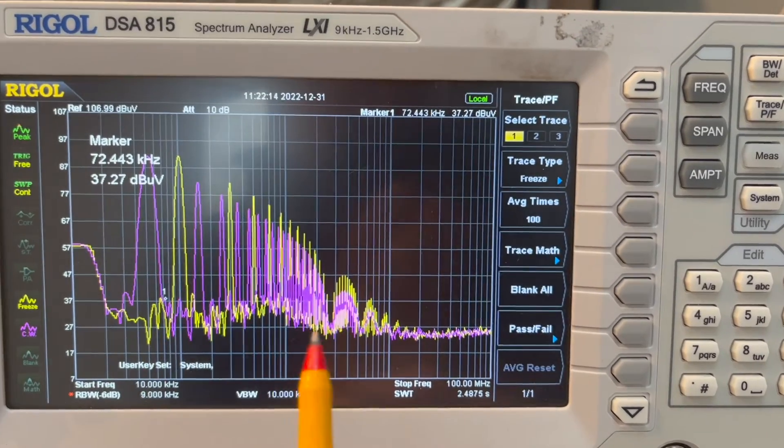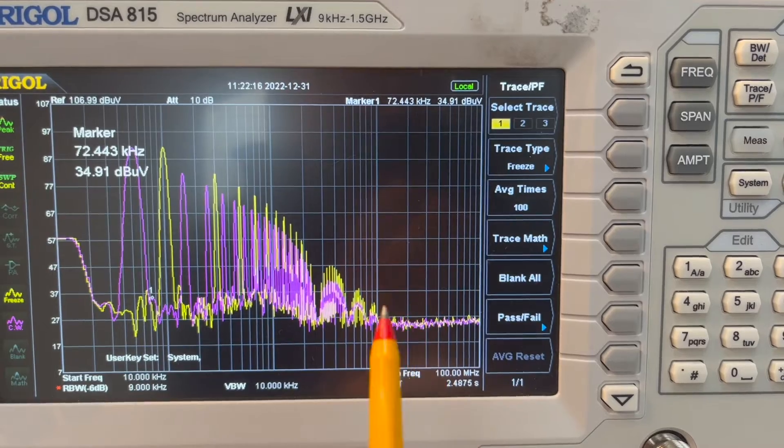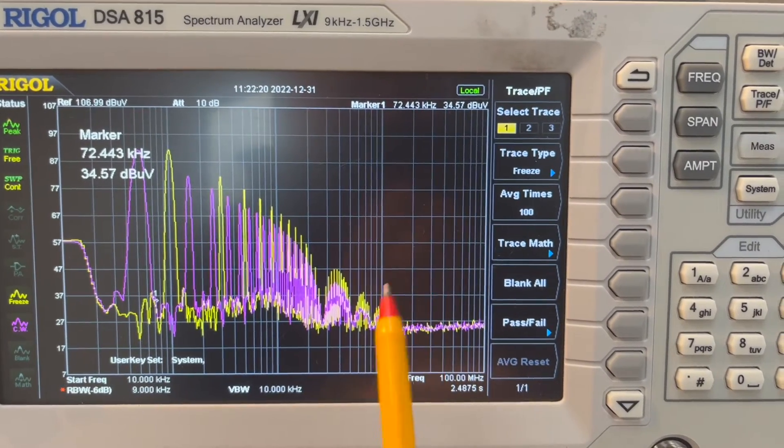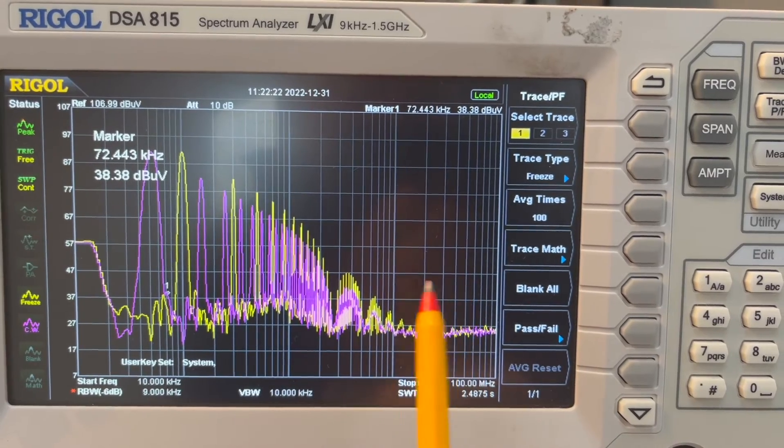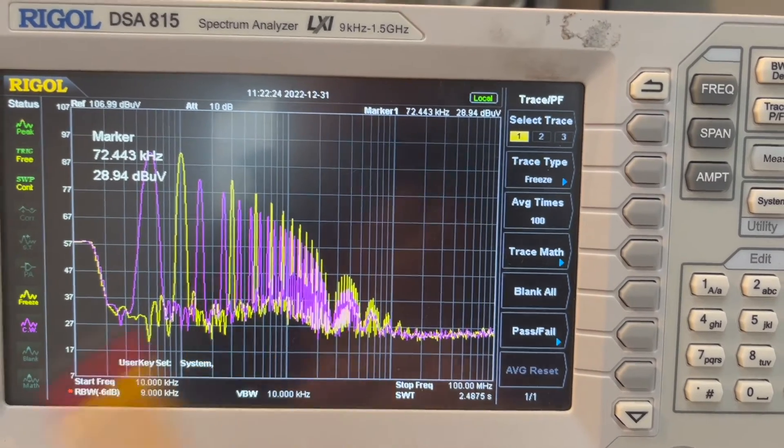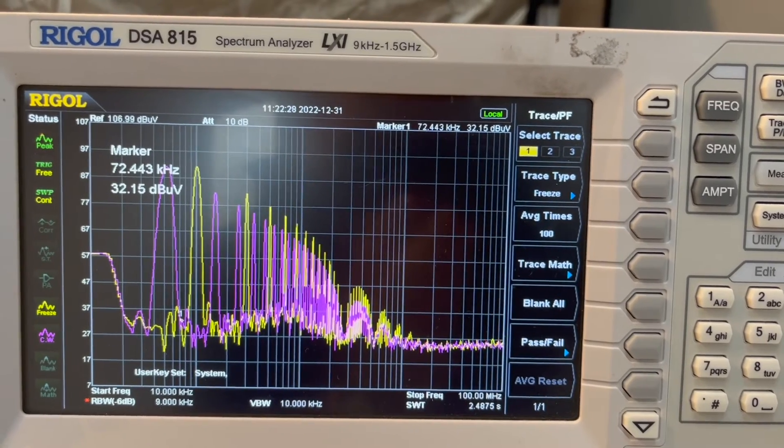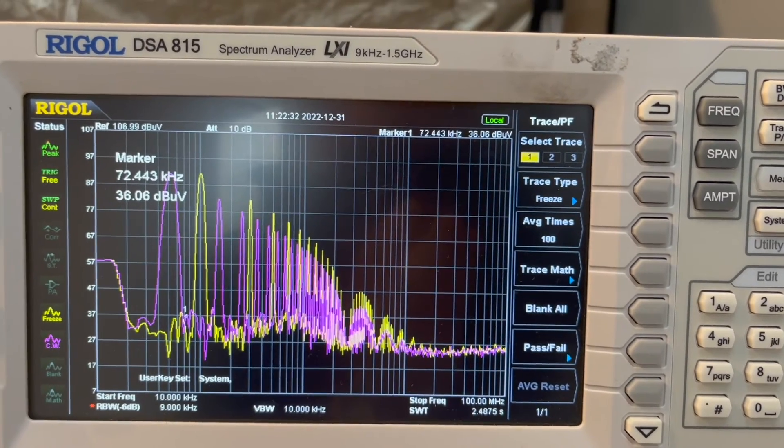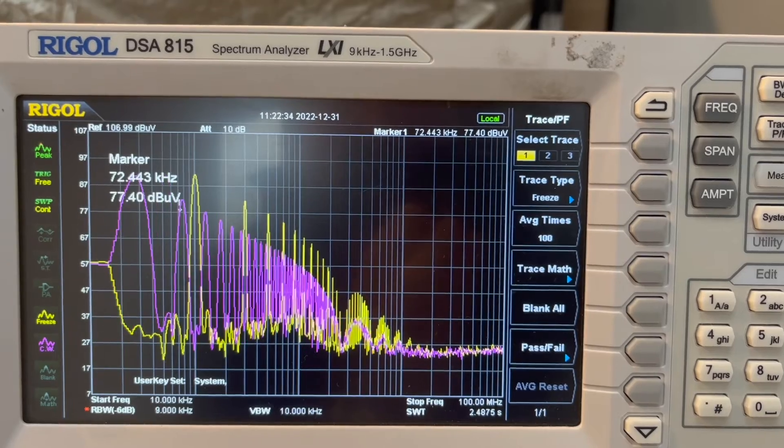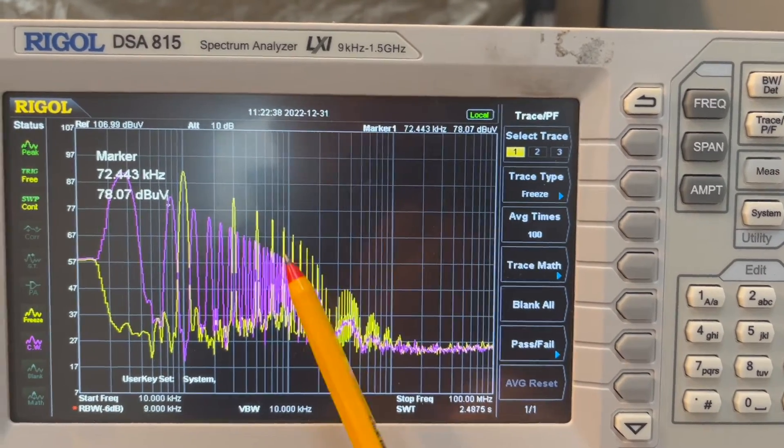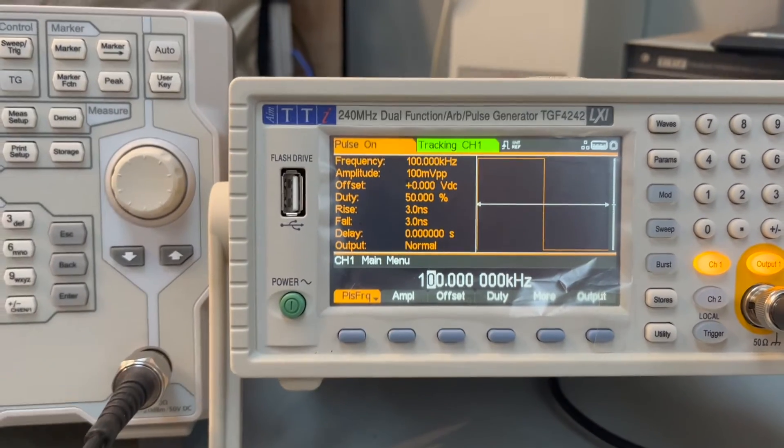That's the impact of changing a switching frequency. It doesn't have any impact when the frequency is high. As we know, the higher frequency performance is really related to your switching speed rather than the switching frequency. Now if we change the switching frequency to be 25 kilohertz, the energy is actually even lower.